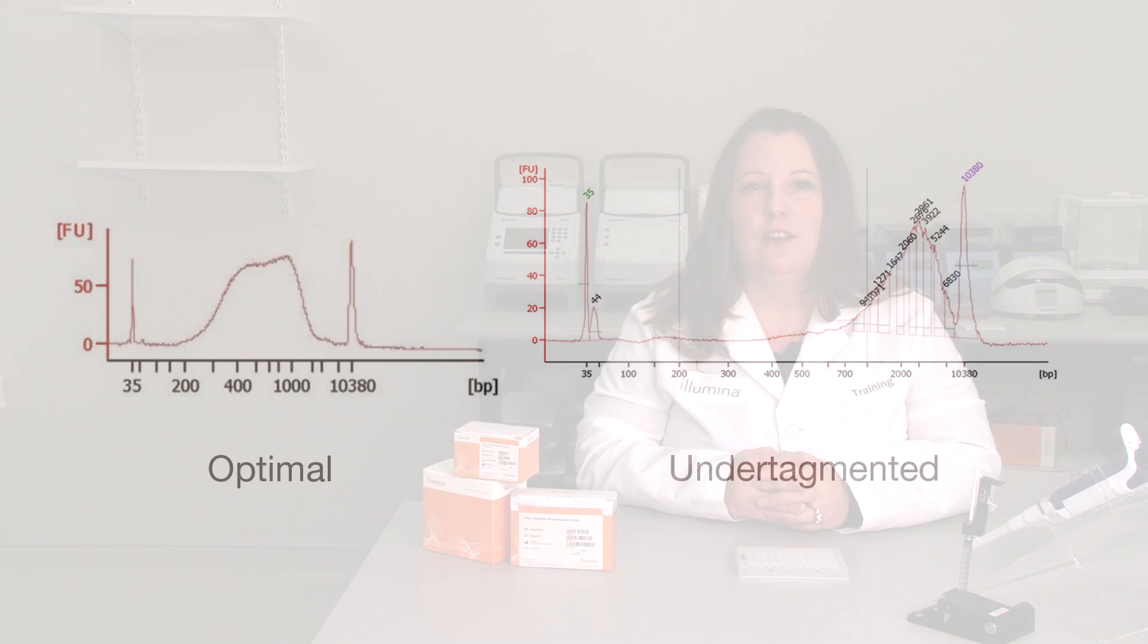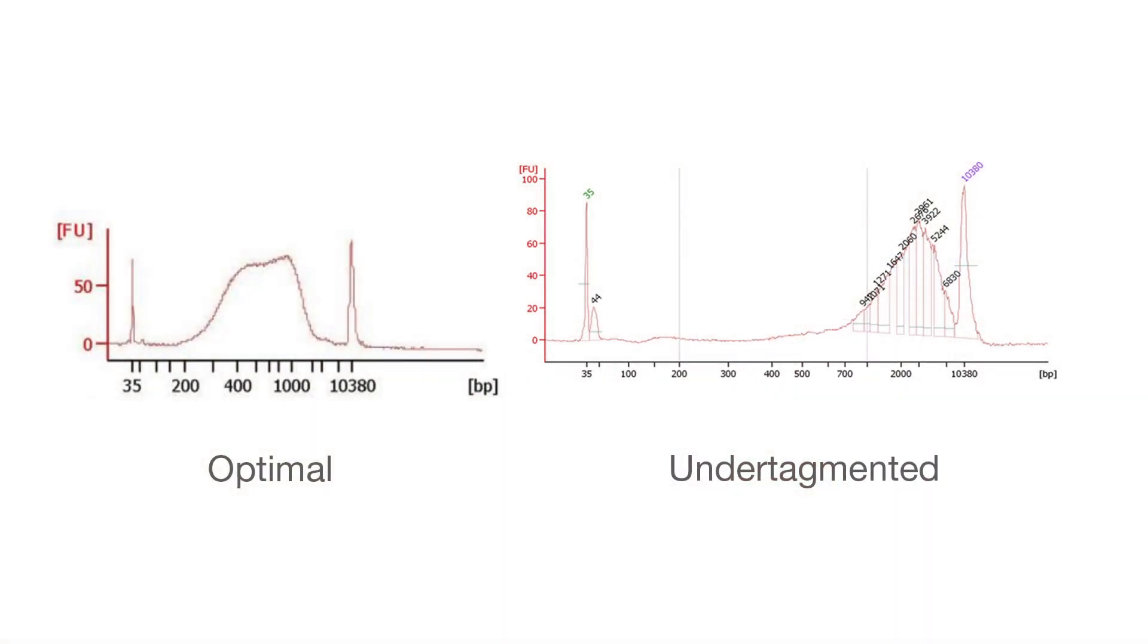So why is this optimal size so important? Libraries larger than about 1 kilobase cluster inefficiently on the flow cell, leading to lower than expected cluster densities. Lower cluster density results in lower output and can increase your overall sequencing costs.